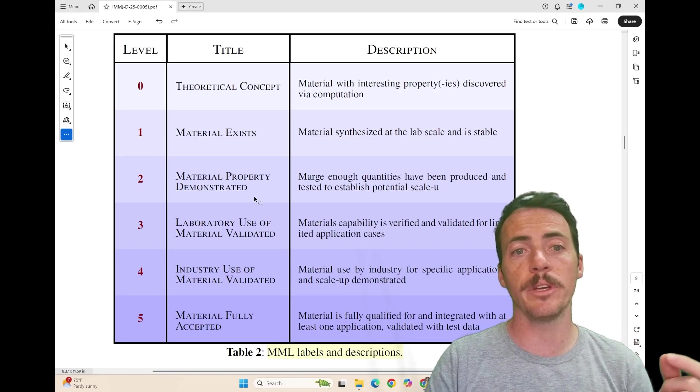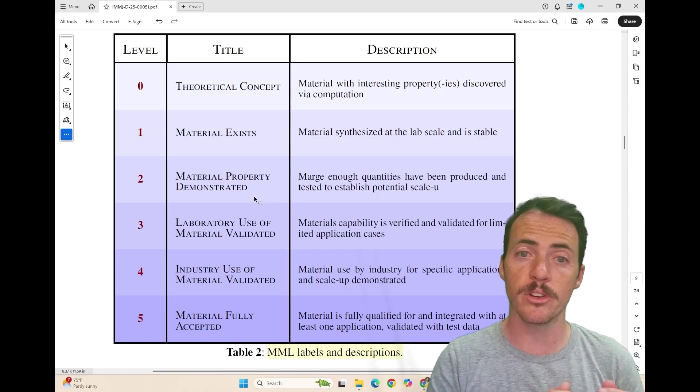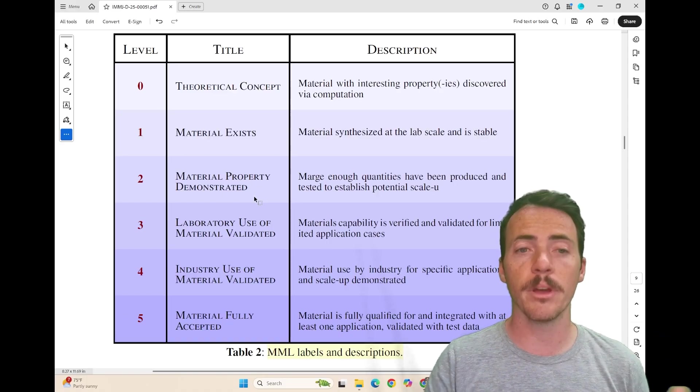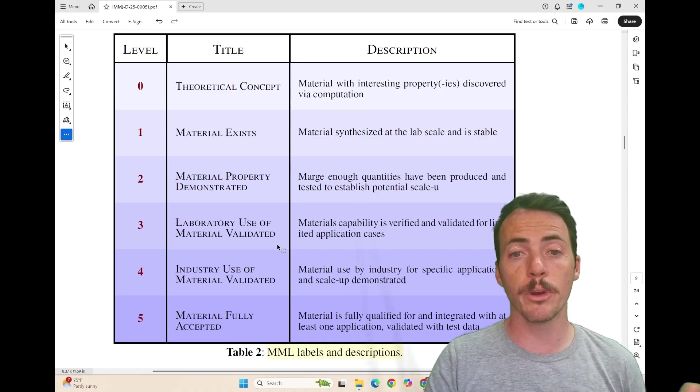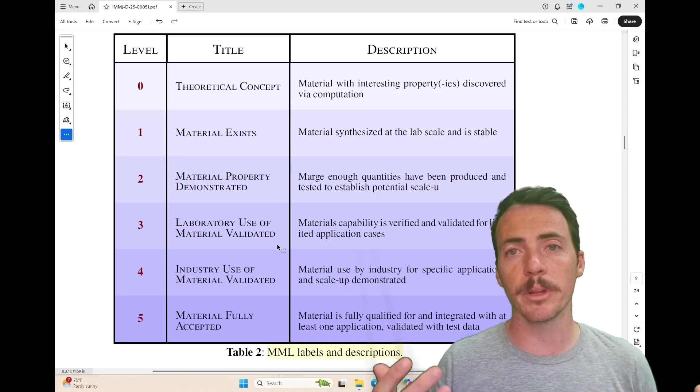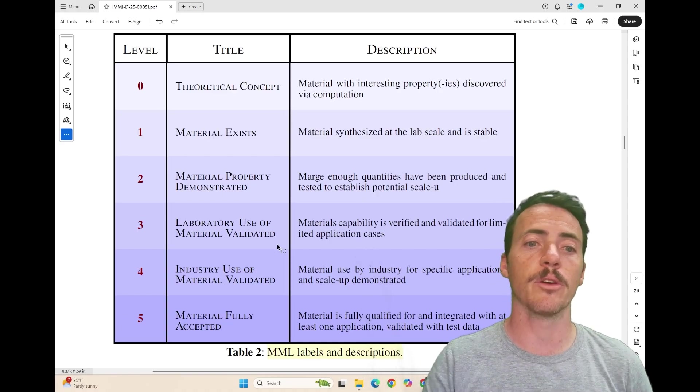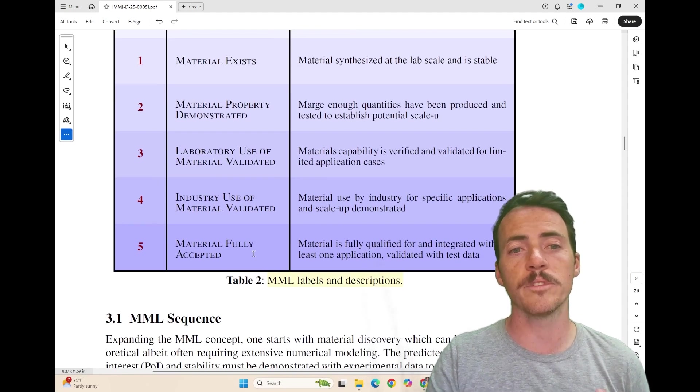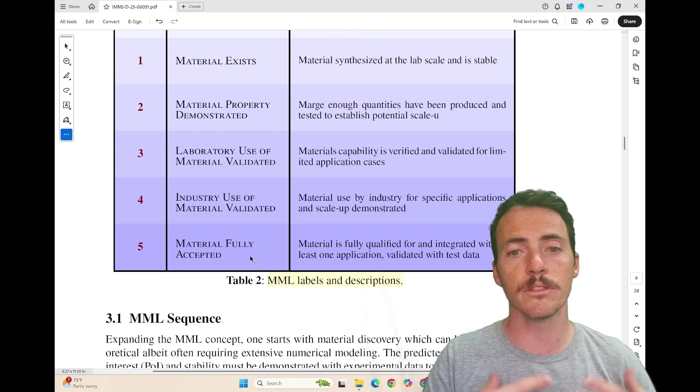MML two would now be demonstration of the properties. Maybe you measured enough of the materials property that you now believe that it could be scaled up to the point where you get to MML three, where you do a laboratory or a limited application of this. Then it goes to four, where you've reached an industrial scale application, all the way up to MML five, which is that the material is fully accepted.